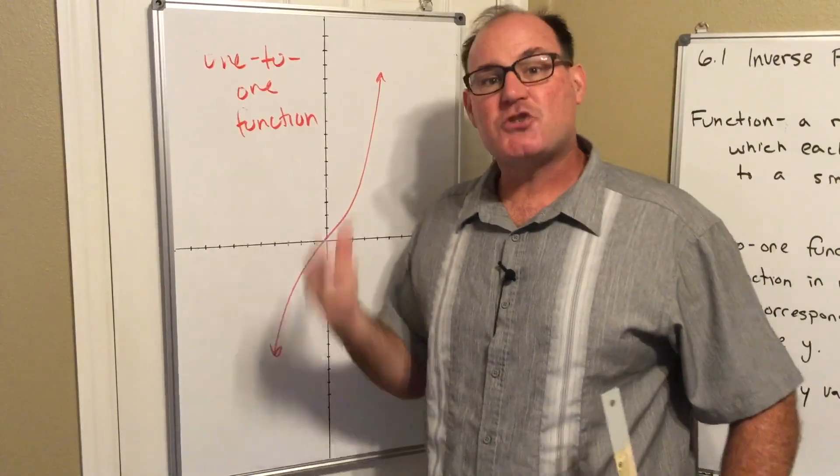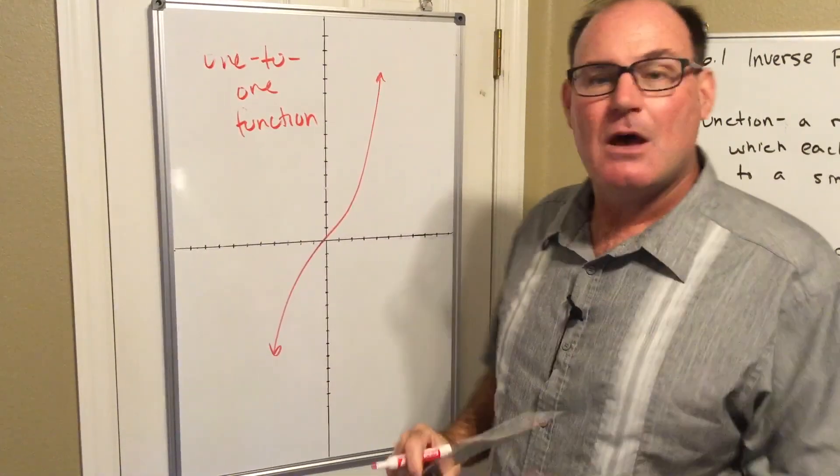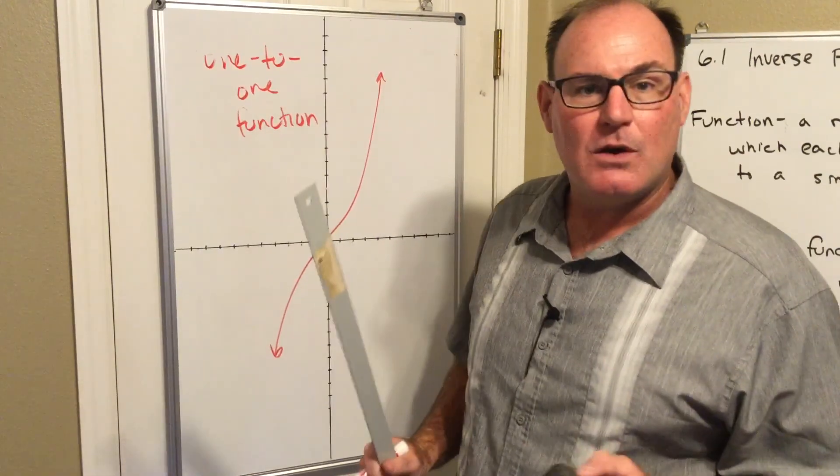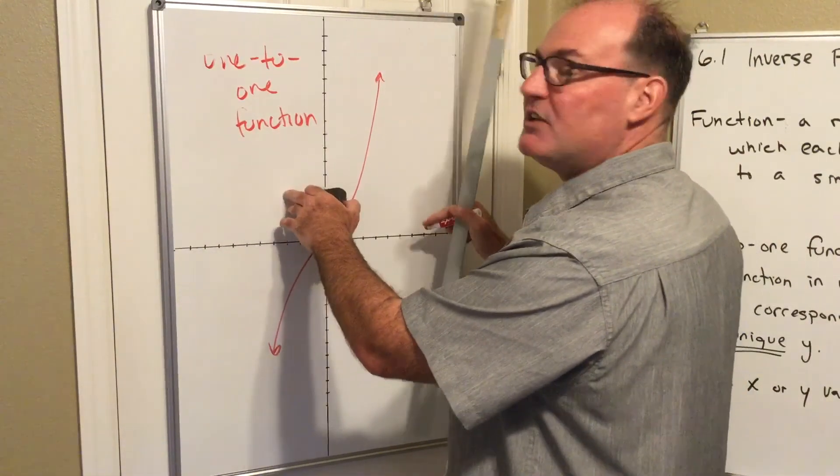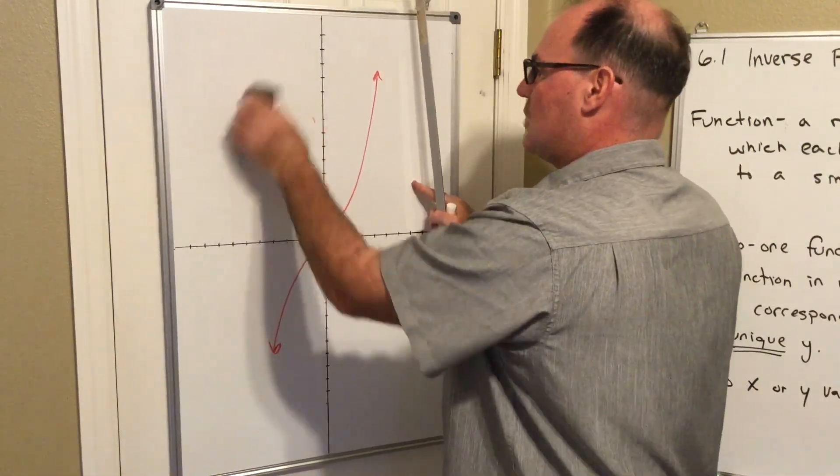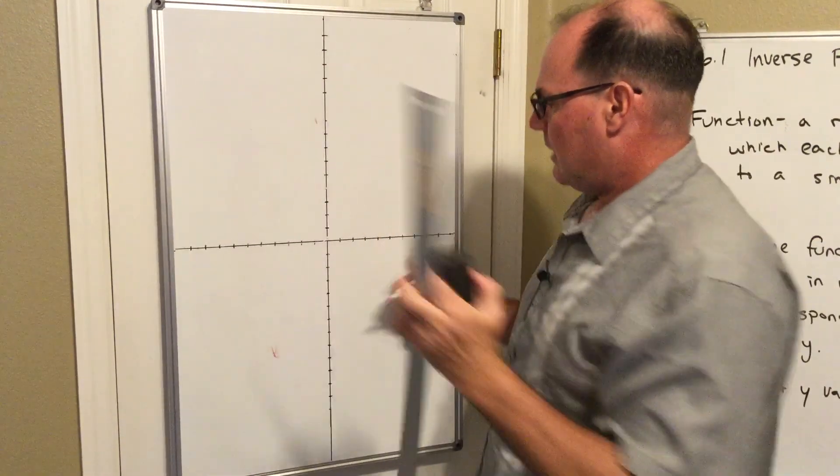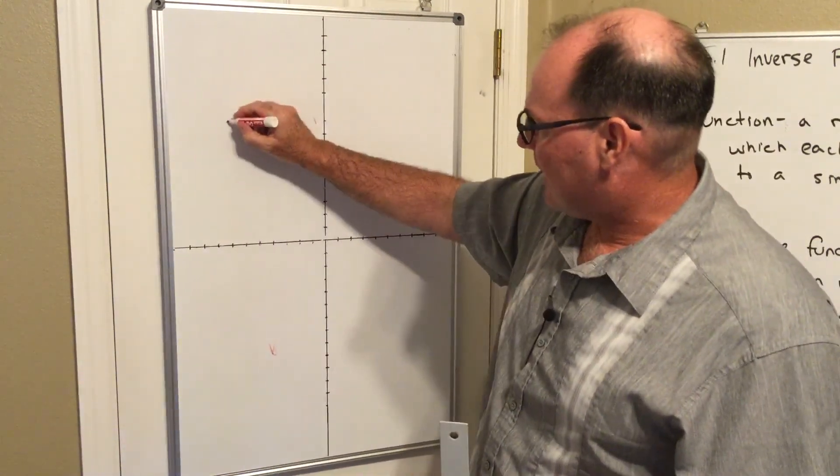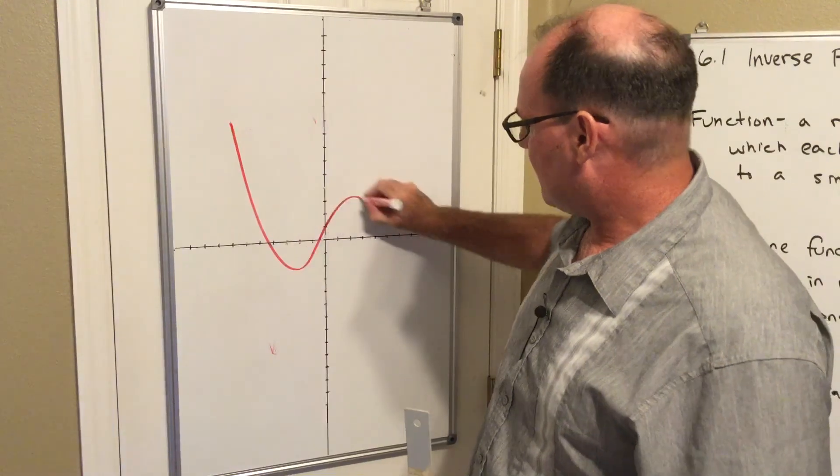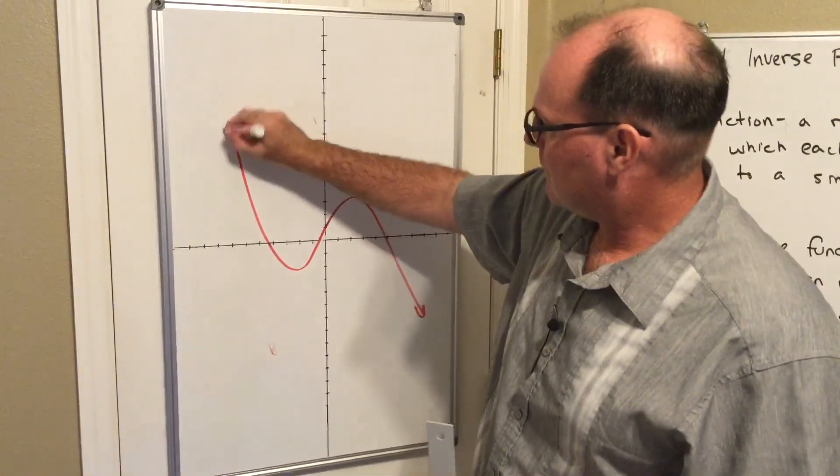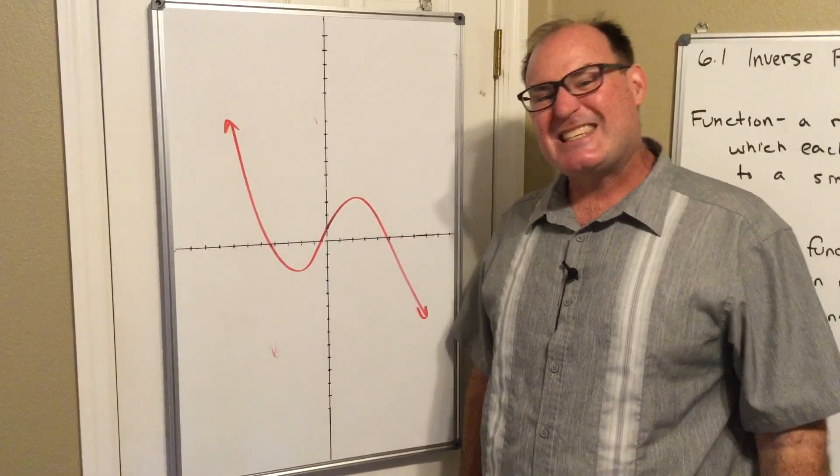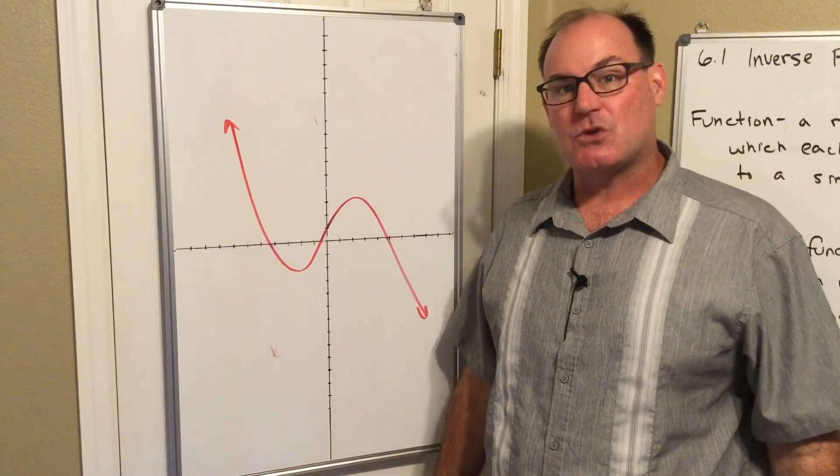Okay, I'm going to draw one more example up here. Again, pause the video. Determine yes or no. Is the following graph a one-to-one function or not? So let's just say that I have a graph that looks like this. So is this a one-to-one function? Yes or no. Pause.